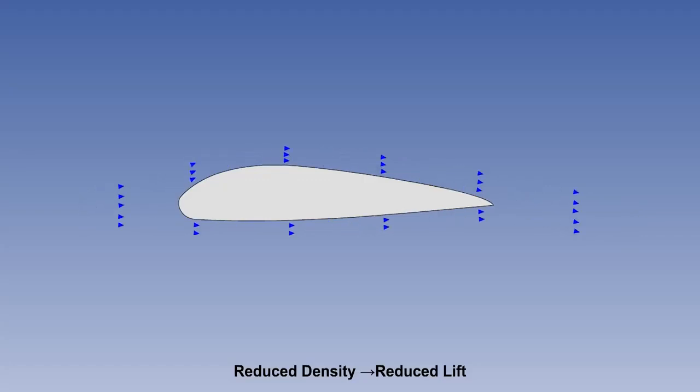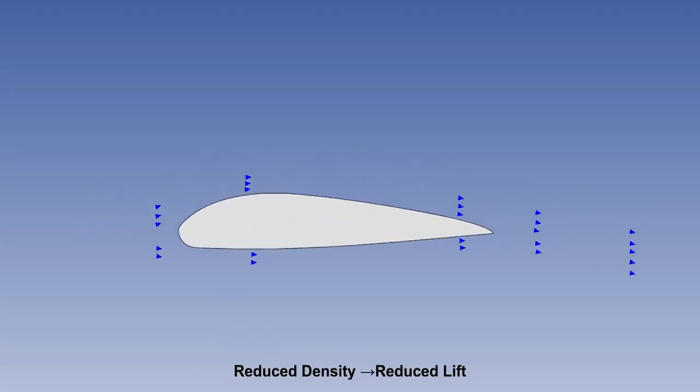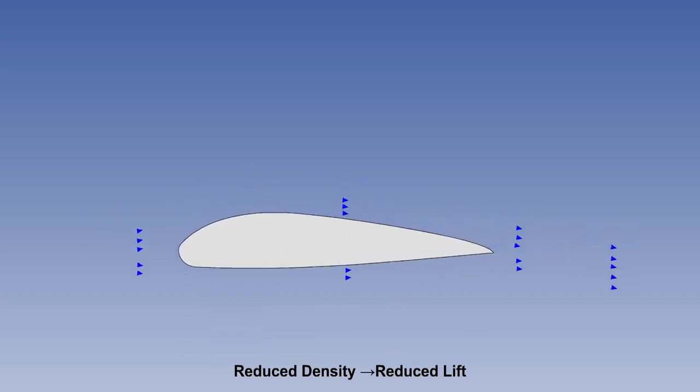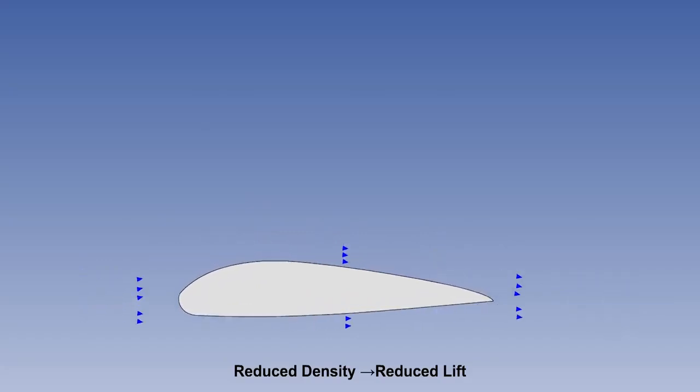The most important property of air is its density. If air density decreases, the mass of air flowing over an aircraft in a given time will decrease. The concept of mass flow is a useful one to keep in the back of your mind when considering principles of flight.